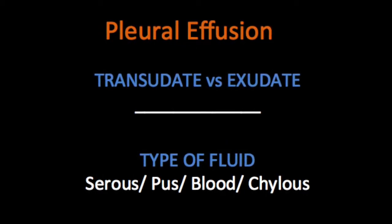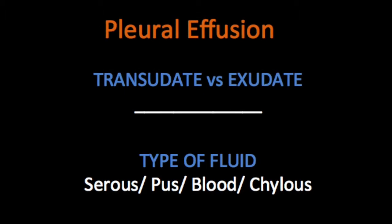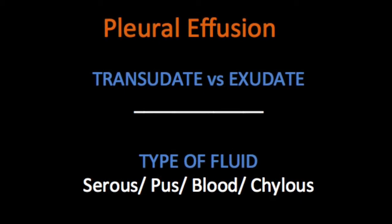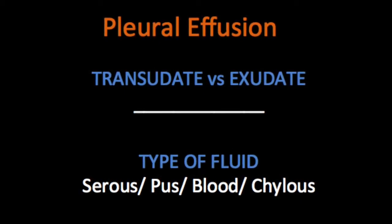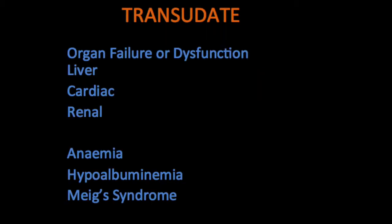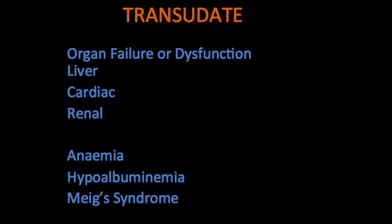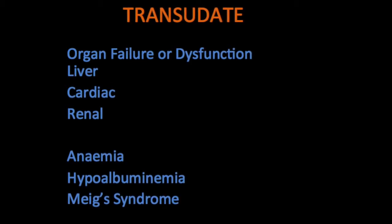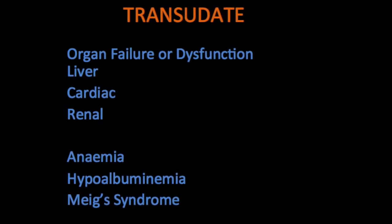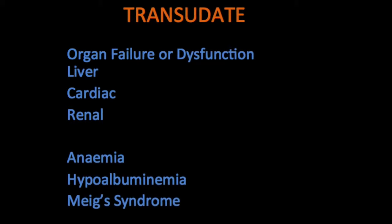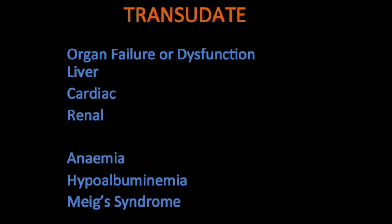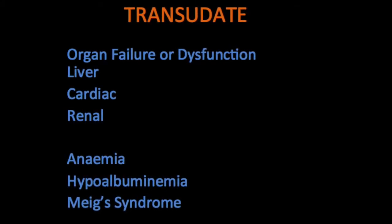When we look at causes of pleural effusion, we divide it into transudate versus exudate, or also by the type of fluid. Transudative causes are several, but easy to remember is organ failure — liver failure, cardiac failure, or renal failure can cause a transudative amount of fluid in the chest. If it is cardiac, it might usually be on the right side, but of course it could be bilateral. Other causes could be reduced albumin as well as anemia.